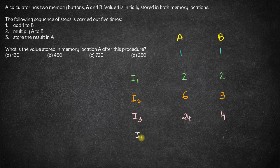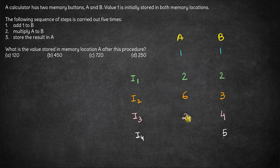In the fourth iteration, we add 1 to B, which becomes 5, then multiply A with B: 24 times 5 equals 120, and store that result in A.